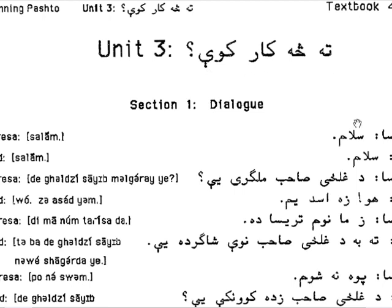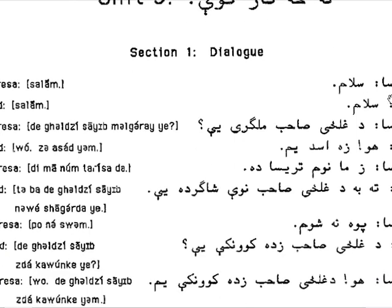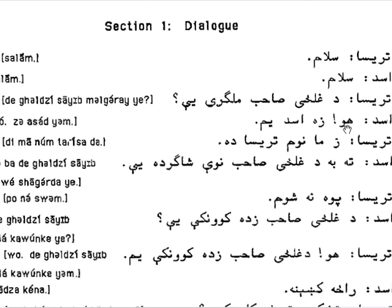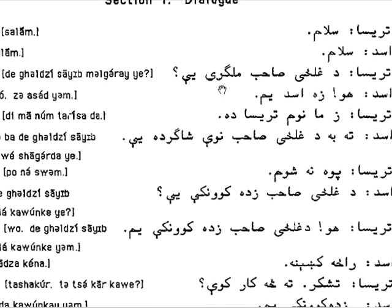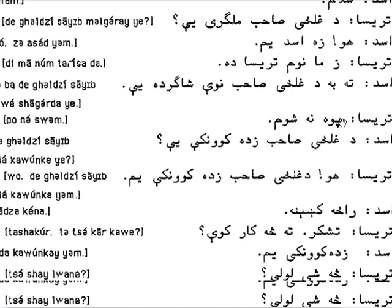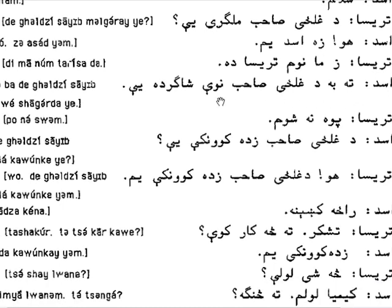It's a dialogue between Teresa and Asad. 'Salam' — Asad responds — 'salam.' Asad says: 'de ghilzai saib milgare yeh woa, ze Asad yum.' Teresa says: 'zamanun Teresa' — 'da my name is Teresa.' 'Teba de ghilzai saib noe shagir da yeh' — are you the new student of Ghilzai Saib?